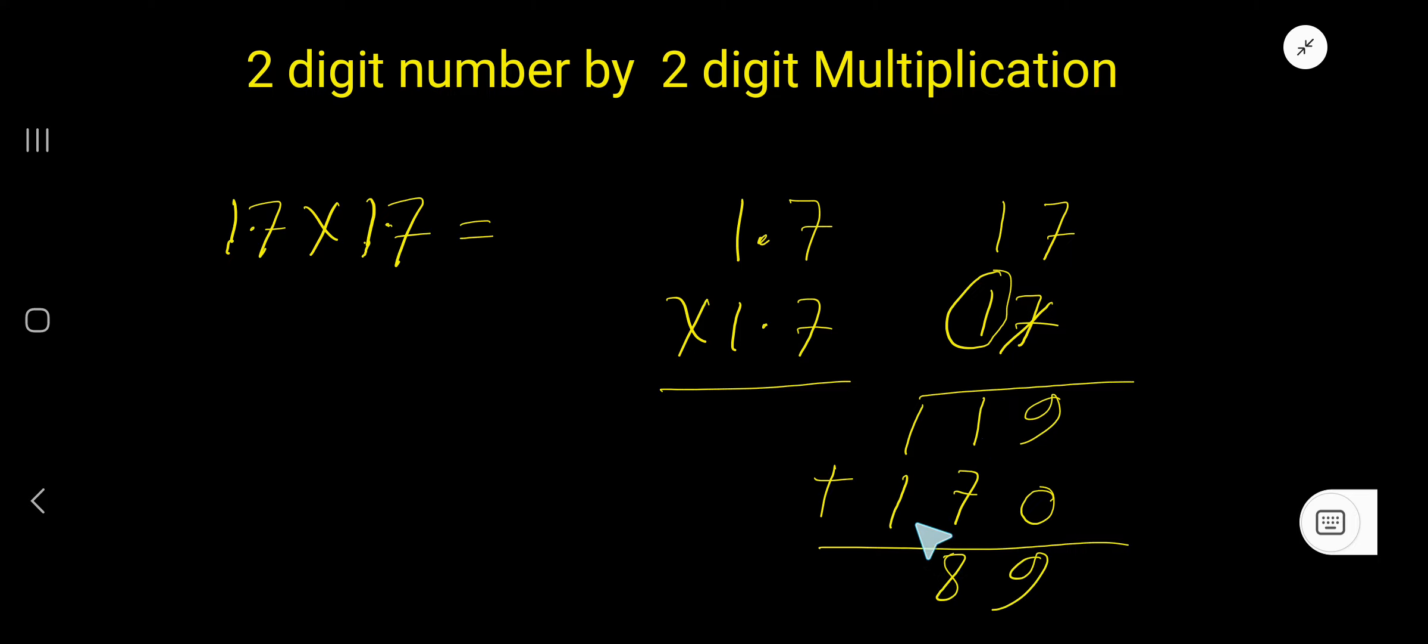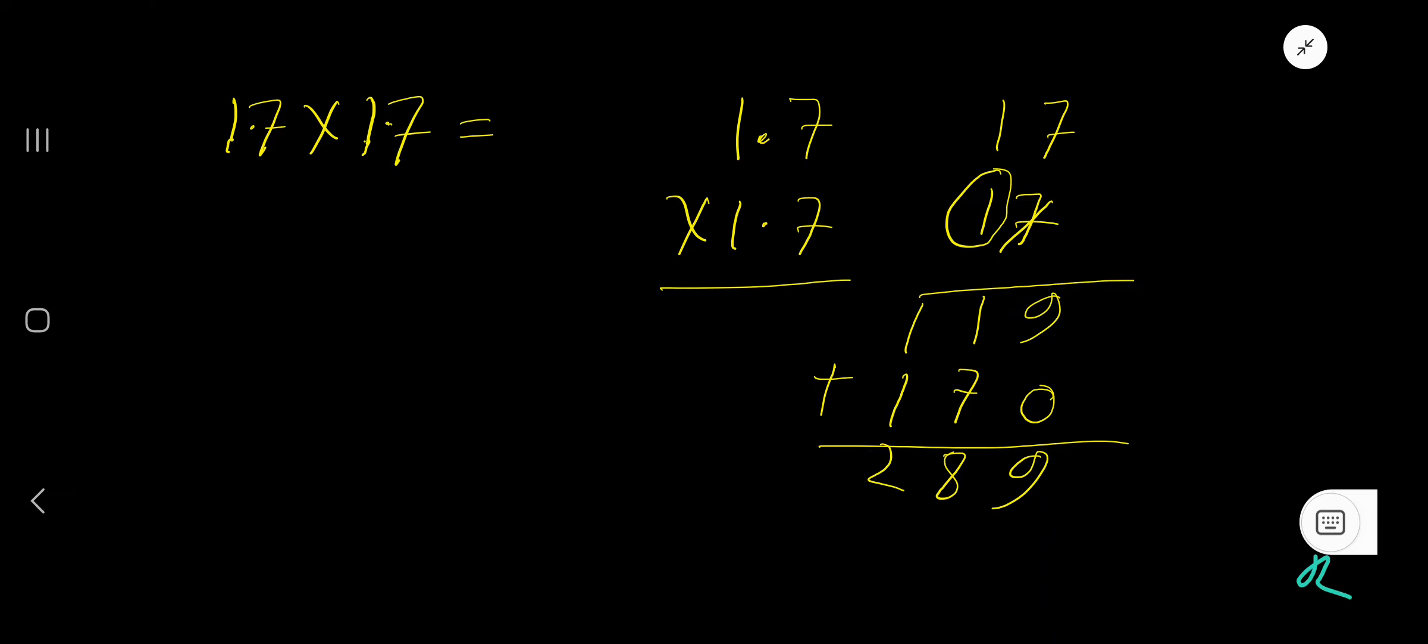Now add: 9, 7 plus 1 is 8, 1 plus 1 is 2. That gives us 289.